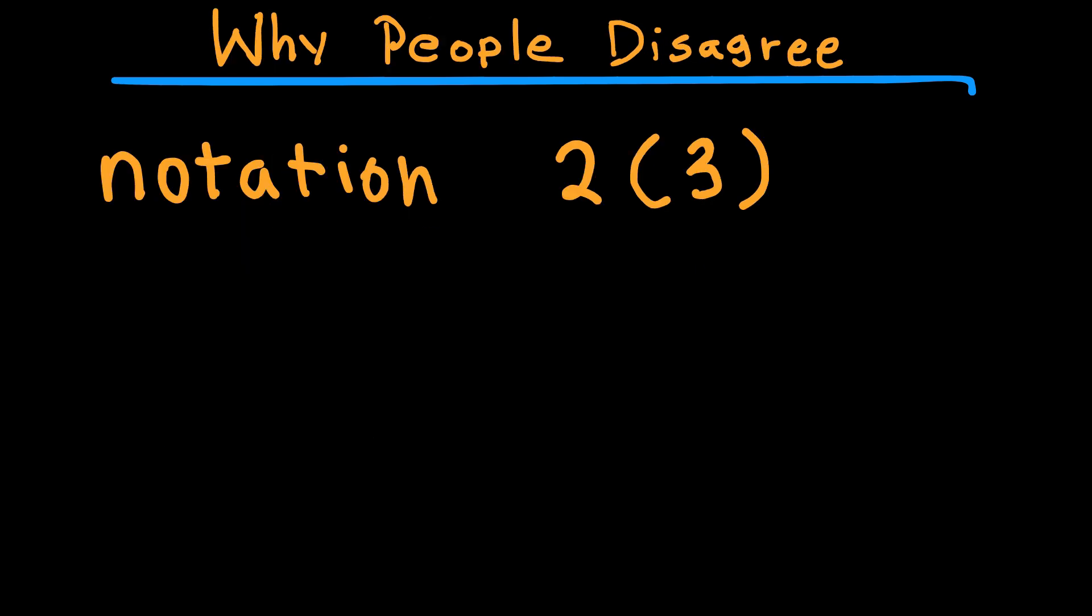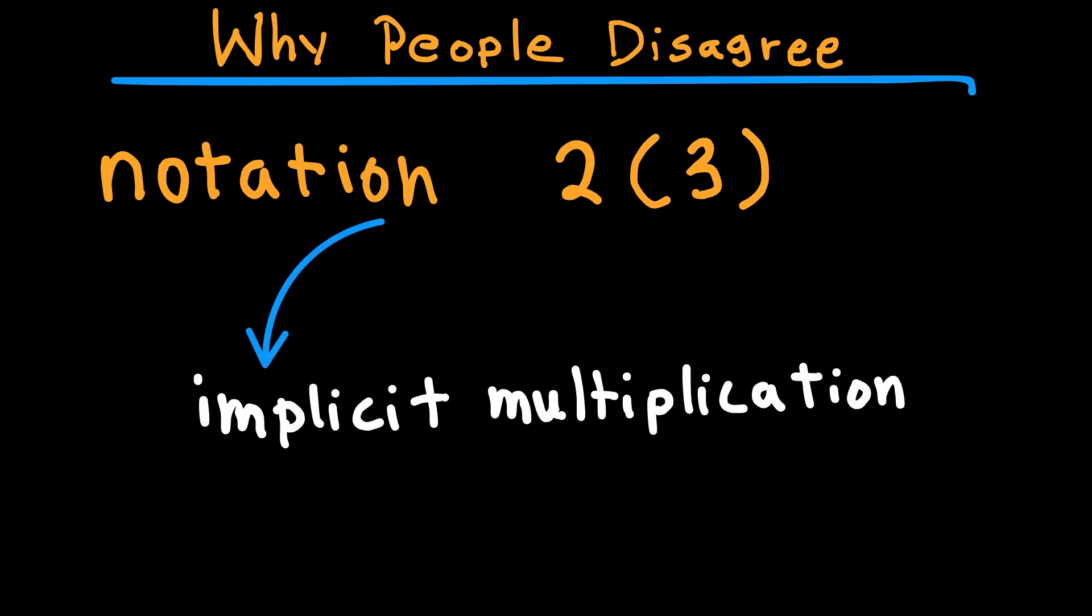Here's why people argue about this. It's about notation. Some say that when you write 2, open brackets, 3, closed brackets without a multiplication sign, it forms an implicit multiplication. And some people argue that implicit multiplication should be done before explicit division. Why? Because of the way algebraic expressions are often interpreted.